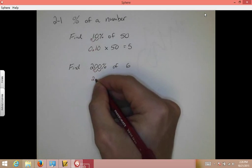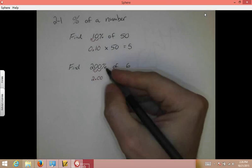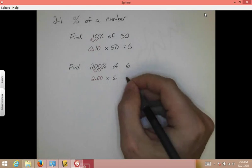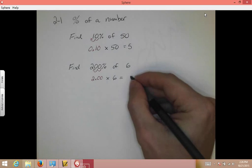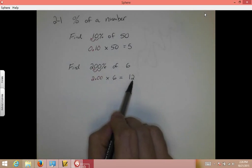This is going to be now 2.00, I'm going to multiply that by the other number, which in this case is 6. And when I do that, I end up with the answer 12. Anytime you're finding a percent of a number, if the percent is larger than 100, you're going to end up with an answer that's bigger than the original number.